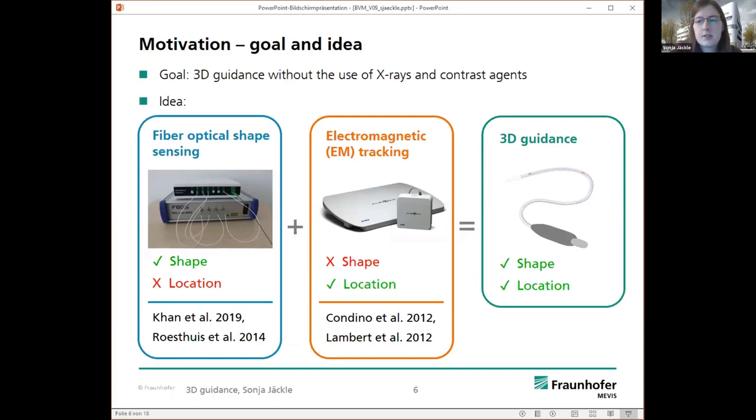And to reach this goal, our idea is to use tracking systems. So the first technology we are using is fiber-optic shape sensing. This allows us to track with optical fibers the shape, but it doesn't give the information where the shape is exactly. And for this task we are using electromagnetic tracking, so the sensors give the location, the position, and the orientation information, but not the shape of continuous instrument. So only for one specific position, you know the location.